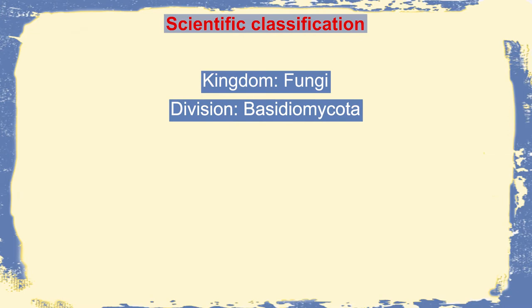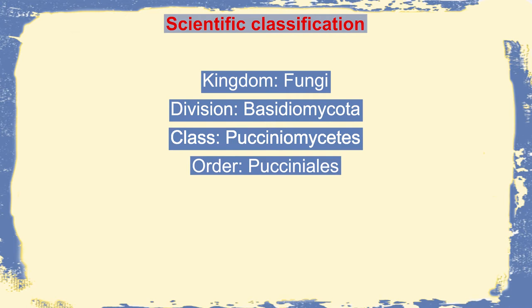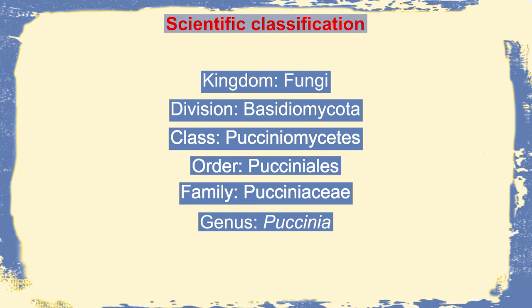To start with, Puccinia, which is a rust fungus, actually belongs to the kingdom of Fungi, division Basidiomycota, class Pucciniomycetes, order Pucciniales, family Pucciniaceae, and genus Puccinia. There are different species like Graminis, like Recondita, but the most dreadful of them is Puccinia graminis tritici, which is causing the black stem rust of wheat or other colored rust of wheat.